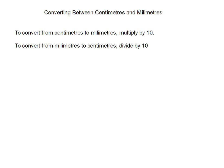In this video we look at how to convert between millimeters and centimeters. So we'll start with centimeters to millimeters. If we want to convert centimeters to millimeters, we just multiply by 10. If we want to go the other way, to convert from millimeters to centimeters, we divide by 10.